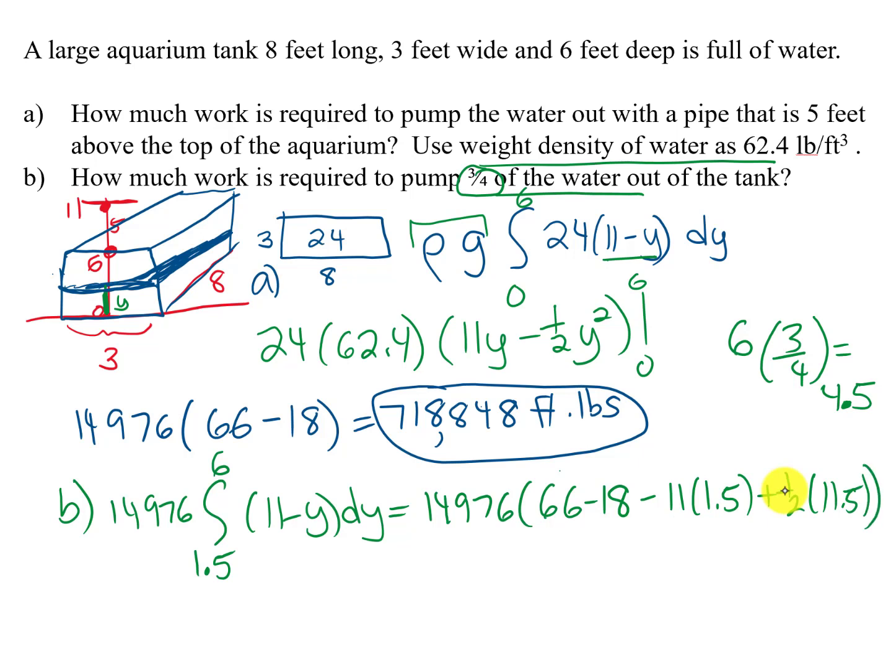All right, so now we can just put that in the calculator, and it looks like we get 488,592 foot-pounds to pump—that's the work to pump three-fourths of the water out of the tank.